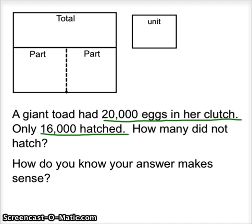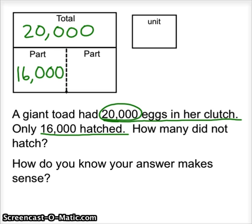The giant toad had 20,000 eggs in her clutch. 16,000 hatched. How many did not hatch? On this one, we know the total. The total number of eggs in her clutch is 20,000 eggs. 16,000 hatched. Well, that's part of the eggs. Only part of the eggs hatched. Part of the eggs didn't hatch. We are missing one of the parts on this one. We won't add 20,000 plus 16,000 because we're not looking for the total. Which means we have to subtract to find the missing part.